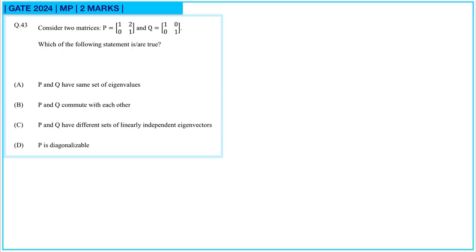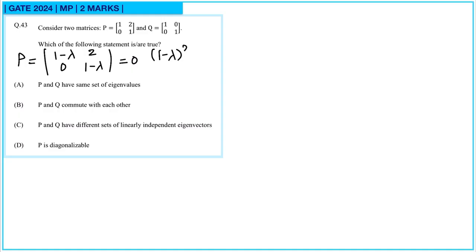Next question. Consider two matrices P and Q. Option A states P and Q have the same eigenvalues. For P, the characteristic equation gives (1−λ)² = 0, so λ equals 1, 1. Q is the identity matrix, which also has eigenvalues 1, 1. So P and Q do have the same eigenvalues, and option A is correct.